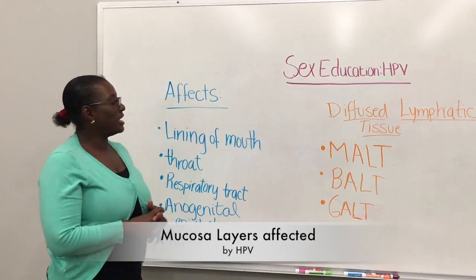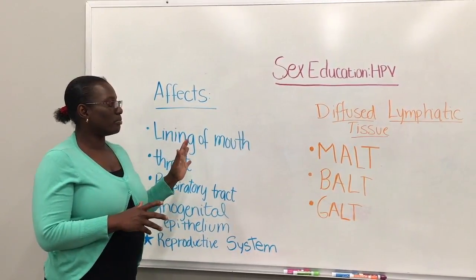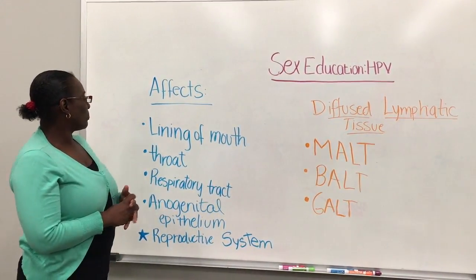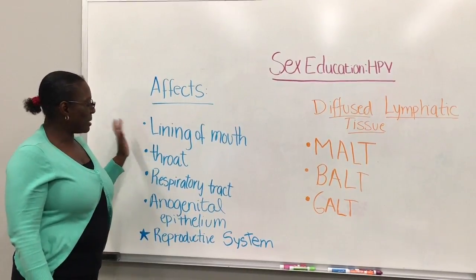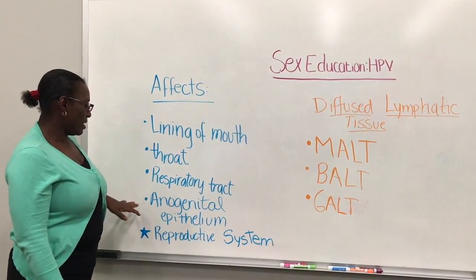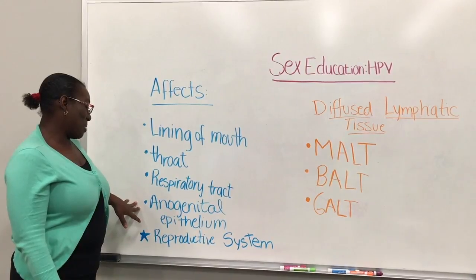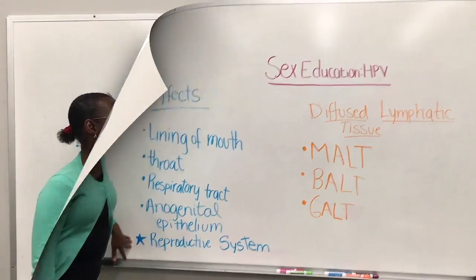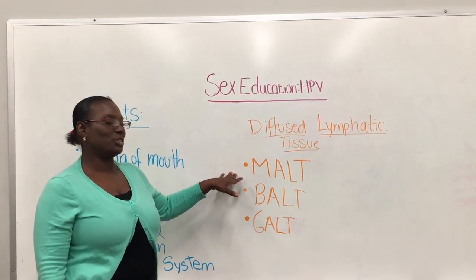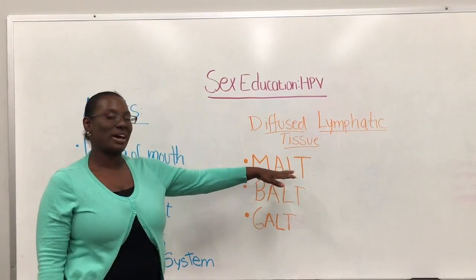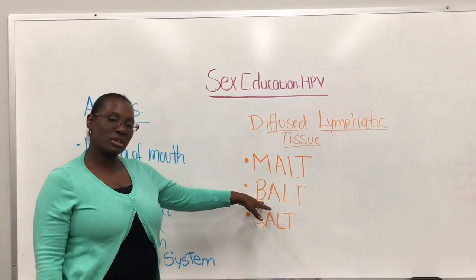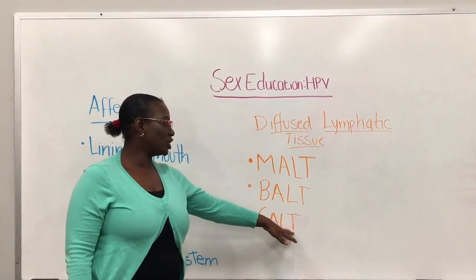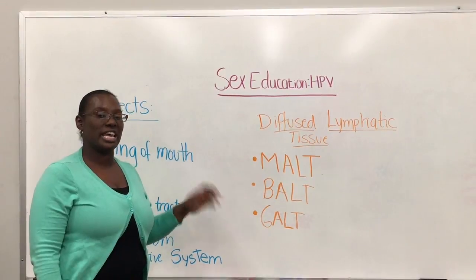HPV affects numerous mucosal layers within our bodies. It affects the lining of the mouth, the throat, the respiratory tract, the anal-genital epithelium, and the reproductive system — mainly the reproductive system. Our diffuse lymphatic tissues — the MALT, which is the mucosal-associated lymphatic tissues; the BALT, which is the bronchial-associated lymphatic tissues; and the GALT, which is our gastro-associated lymphatic tissues — are all affected by this HPV virus.